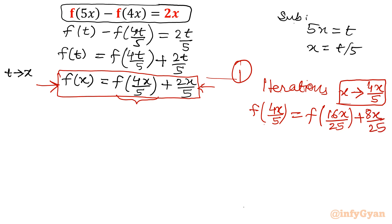Let me put the value here. f of x is equal to f of 16x over 25 plus 8x over 25. This is the value of f of 4x over 5, plus 2x over 5. Now one term increased by iteration number 1. Let me call this roman 1.